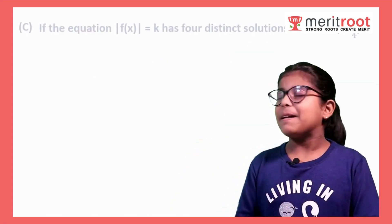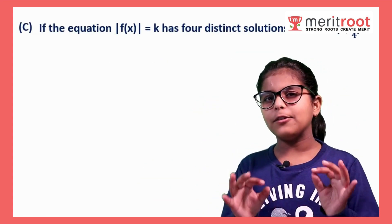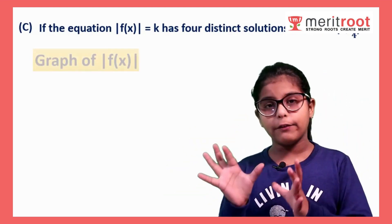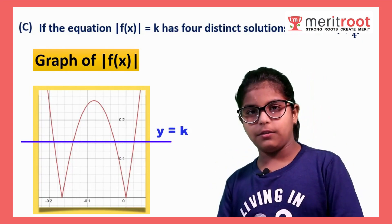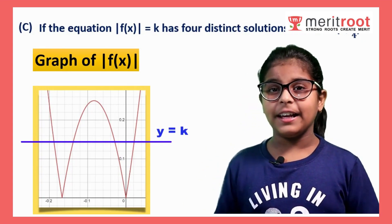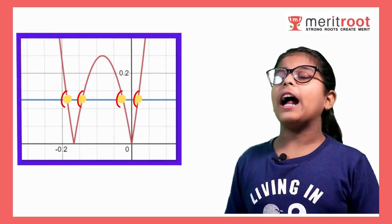Now I'm checking statement C. Here we have to only draw the graph of mod of f(x) and y is equal to k in the given interval. And here you can see clearly, they are cutting each other at 4 points.